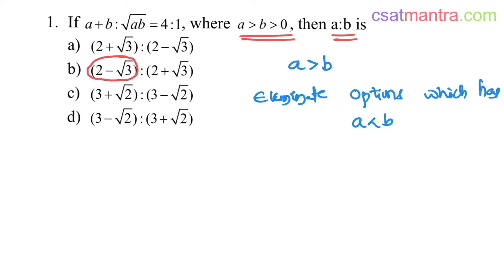2 minus root 3 is less than 2 plus root 3, right? You have subtracted here, you have added here. So eliminate option B.